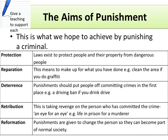The next is deterrence — criminals should be put off committing crimes in the first place, or put off committing that crime again. The next one is retribution — taking revenge on the person who has committed the crime; an eye for an eye — for example life in prison or capital punishment for a murderer. Finally we have reformation — punishment given in order to change the person for the better so that they can become a part of normal society again. Pause the video if you need to try and attach a teaching to each one of those ideas.